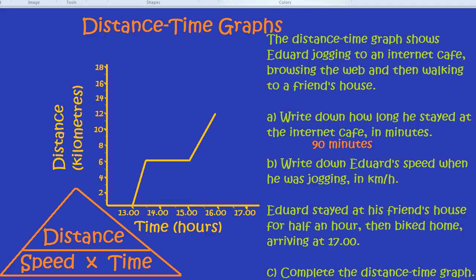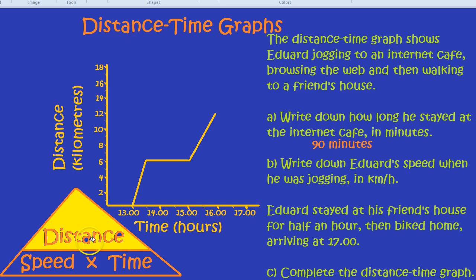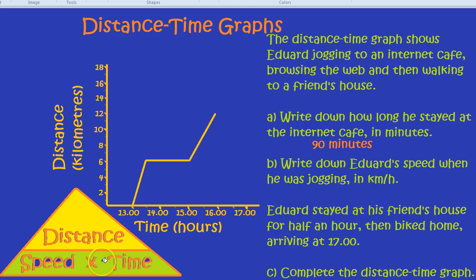Really important to remember, you have the distance on the top. Many students put the speed at the top, but it's the distance that goes at the top. Distance goes at the top, not speed. Then below, we have speed times by time. Speed multiplied by time. There it is. Speed multiplied by time. So, there's our distance-speed-time triangle.